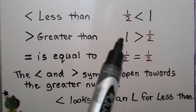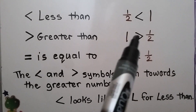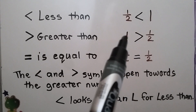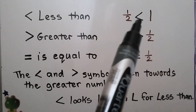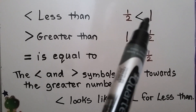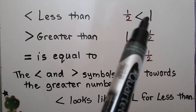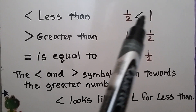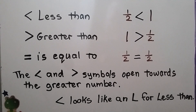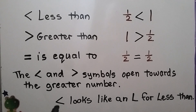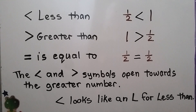Like here, one is greater, so the big side is open to the one. And on this one, the one is greater, so the big side is open to the one. This less than symbol kind of looks like a crooked L for less than — like the L in 'less.'